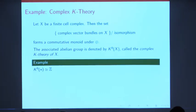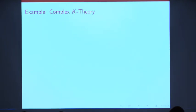So a simple example, if X is a point, then a complex vector bundle on X is just a finite dimensional complex vector space. And such things are classified up to isomorphism by their dimension. And the dimension is just some natural number. If you take the natural numbers and throw in additive inverses, what you get is the group of integers.